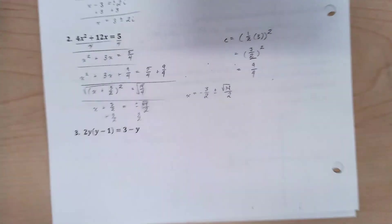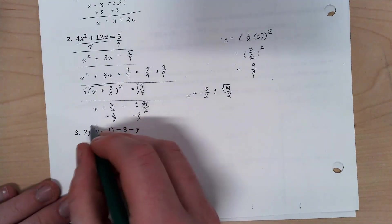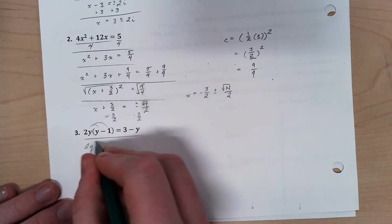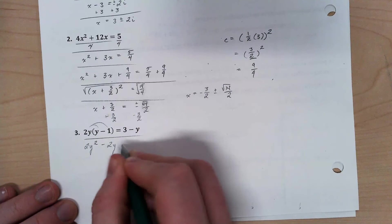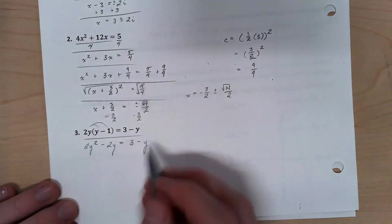Okay, last one. So if I'm going to get my variables isolated, I first need to have this in something resembling quadratic form. So let's get that distributed.